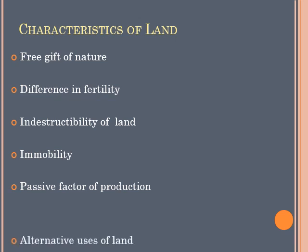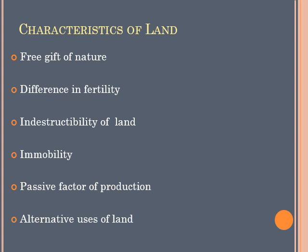The last characteristic is alternative uses of land. Land is used for different purposes — it is not only for agricultural production. It is also used for poultry farming, dairy, cultivation, constructing buildings, sheep rearing, and many other varieties of work. So land is not just for agricultural work but is meant to be used for different purposes.